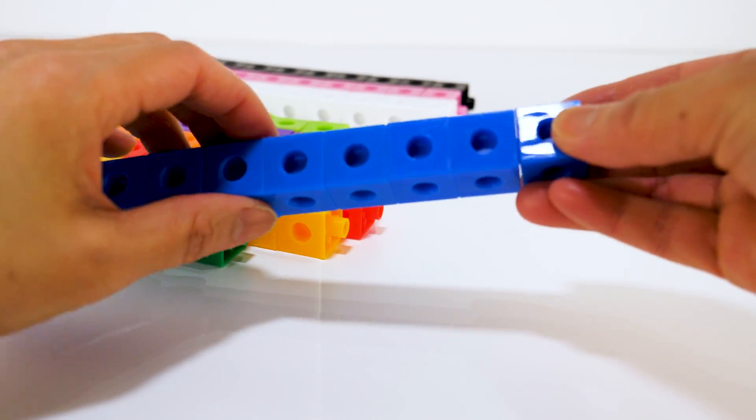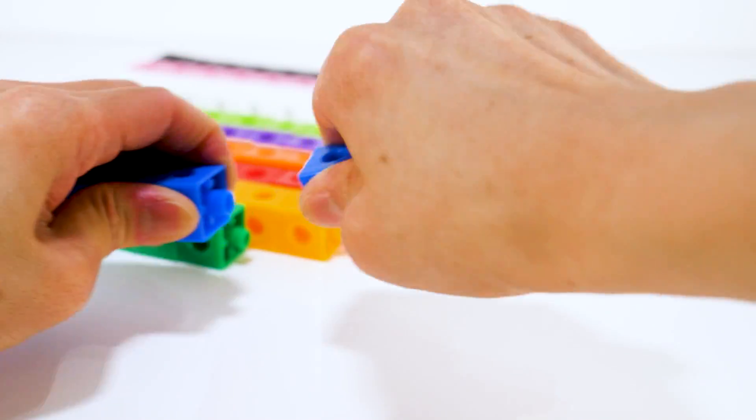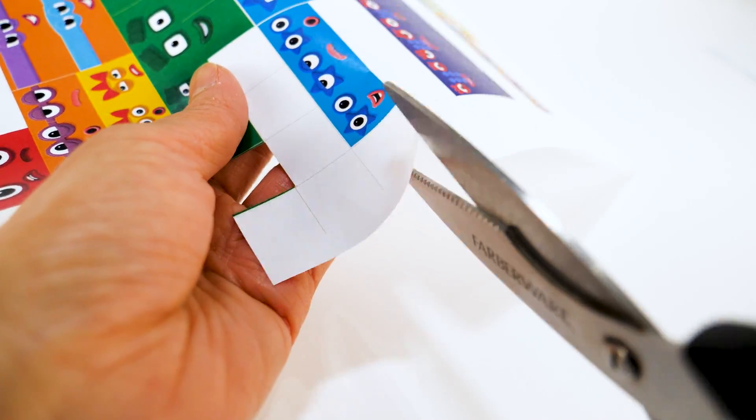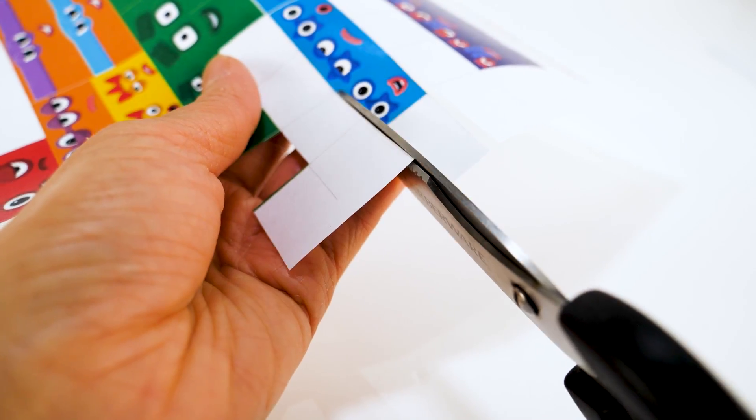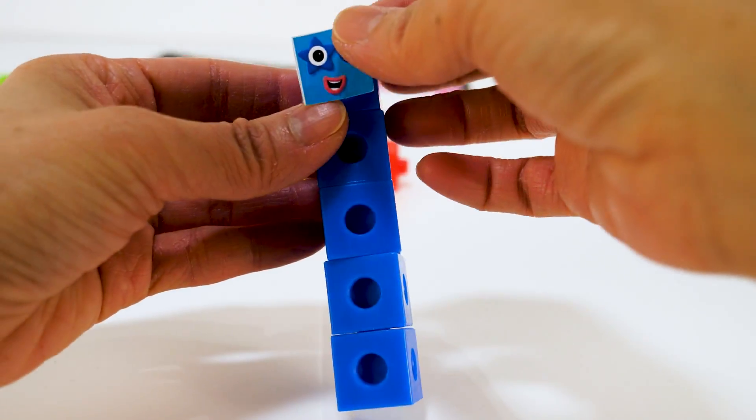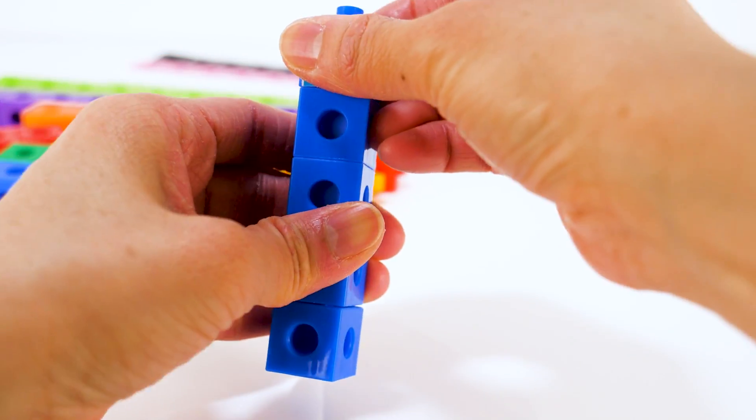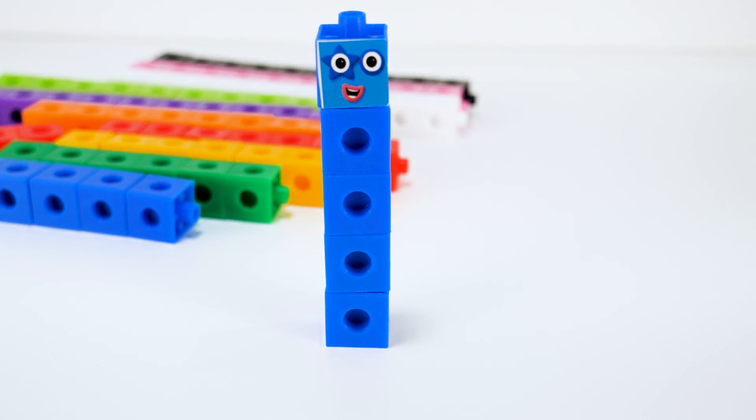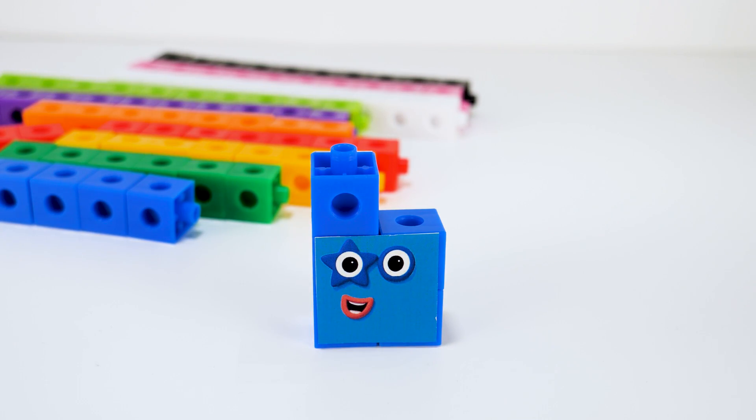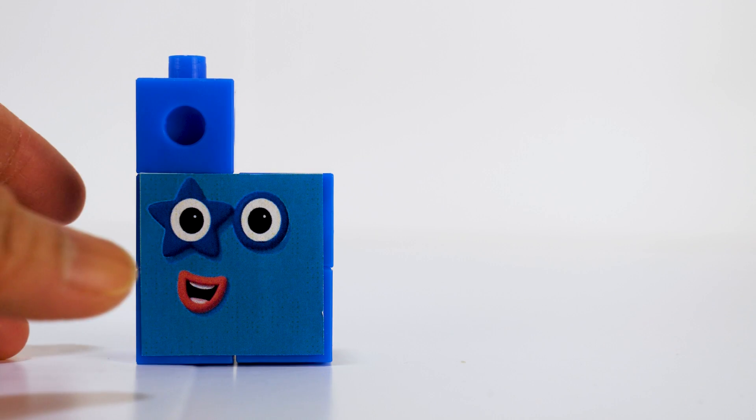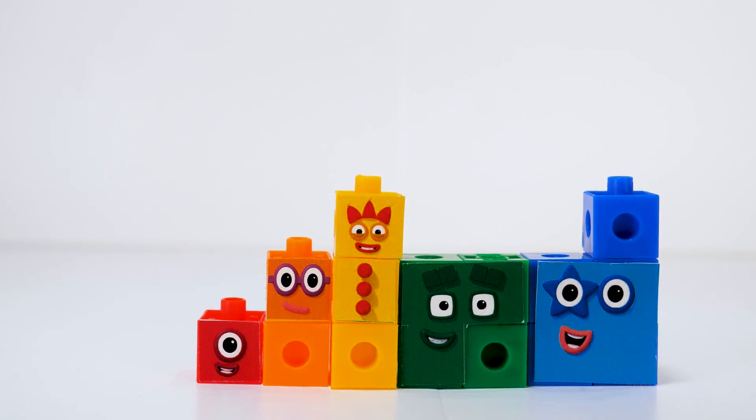The next number block is number block 5. She is made up of five blue color blocks. She loves to sing and plays the guitar. She has a star on her right eye. Number block 5 can be rearranged into an odd block left. 1, 2, 3, 4, 5. Number block 5.